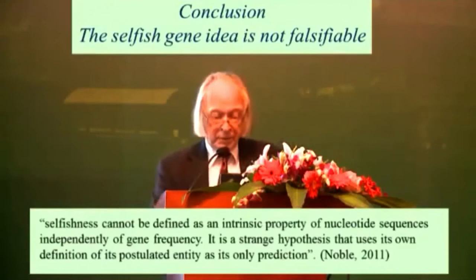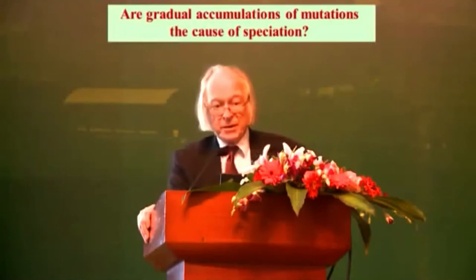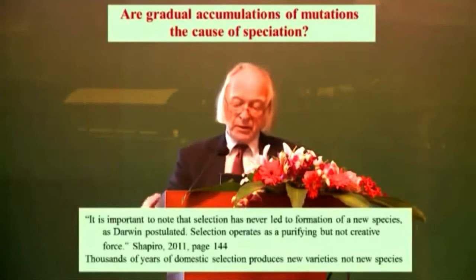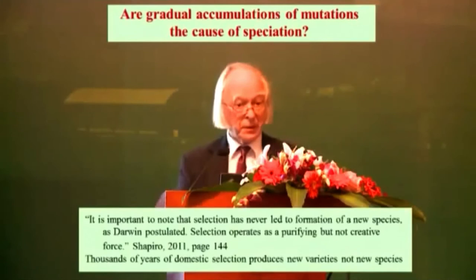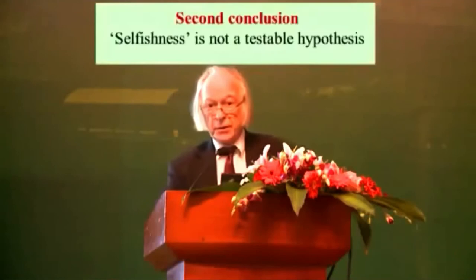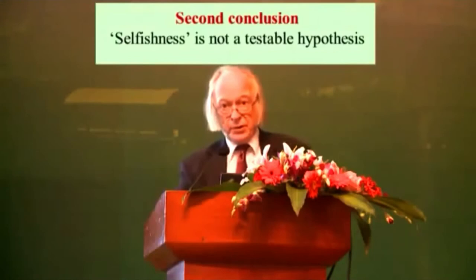Coming back to the question of randomness of mutations — we've seen that they're not random. And gradual accumulation of mutations — we've seen they're not, at least in the case of certain important proteins. Another thing to add is that so far it has not been shown that that process could, in any case, give rise to a new species. Notice that thousands of years of domestic selection has produced new varieties of dogs, fish, and whatever, but not new species. So my main conclusion here is that the concept of selfishness applied to genes is simply not testable. And now it raises a very big question: why was it ever thought to be an empirical fact?